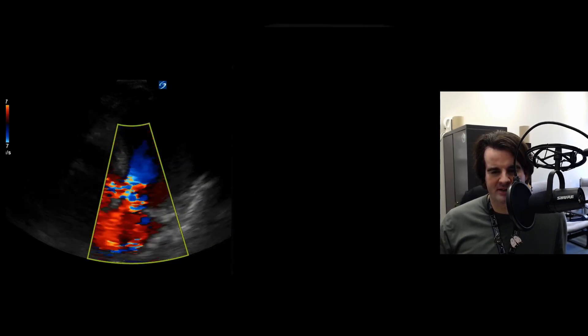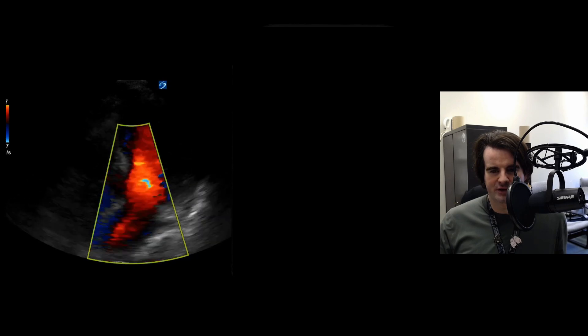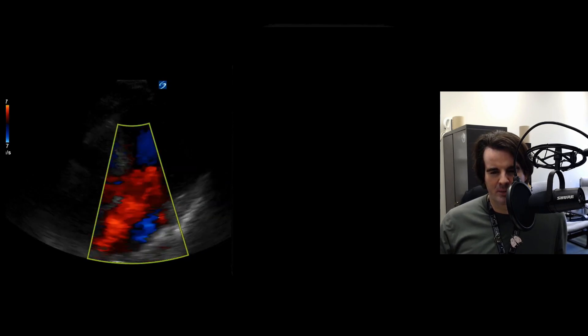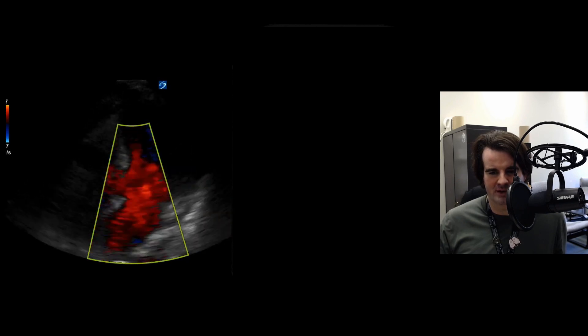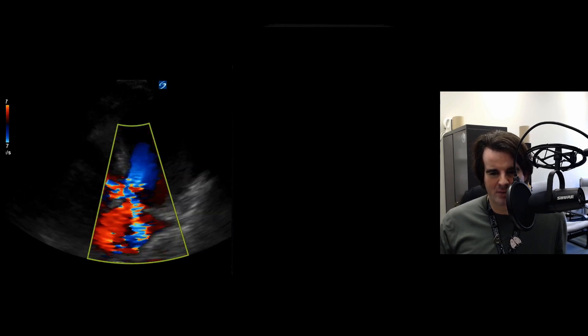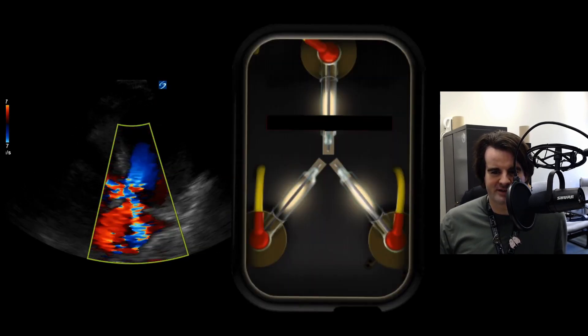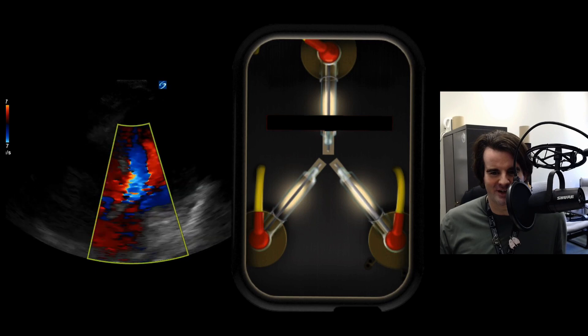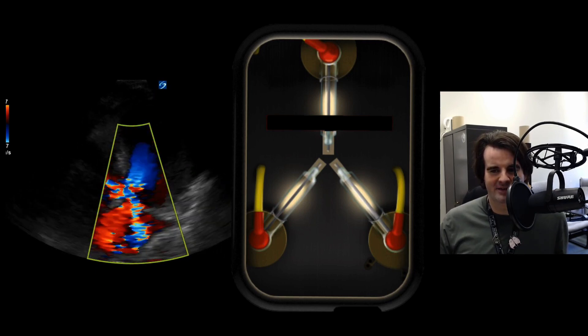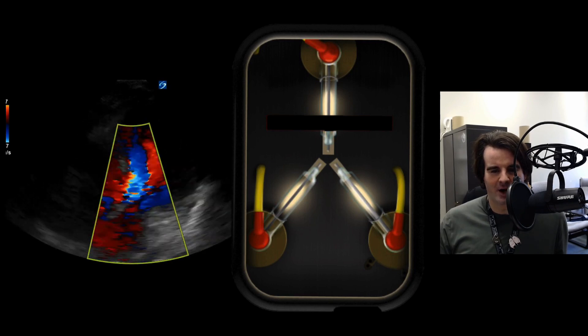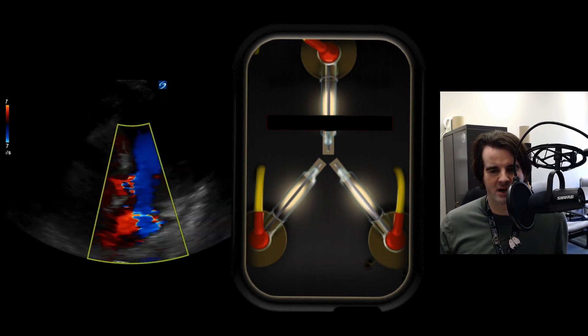When we add color Doppler, we see a very distinct profile: flow acceleration to the outflow tract, but also an eccentric MR jet directed posterior-laterally. When I've discussed this with colleagues, we came up with the idea of a 'reverse flux capacitor' — like the flux capacitor from Back to the Future, but flipped around, giving this upside-down Y appearance of what we see here.